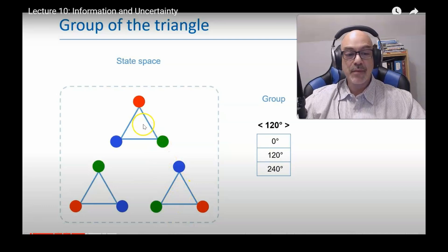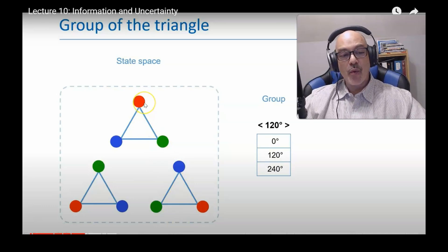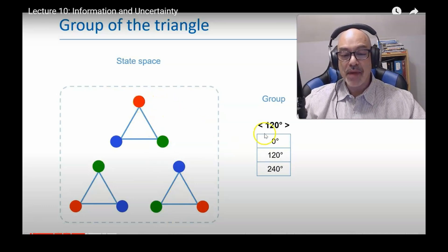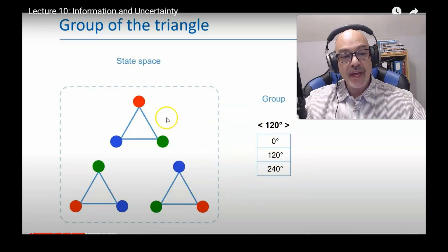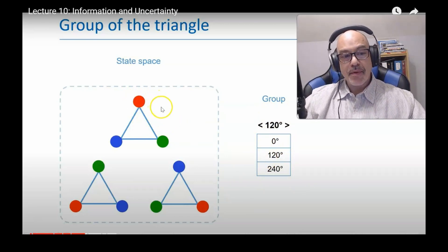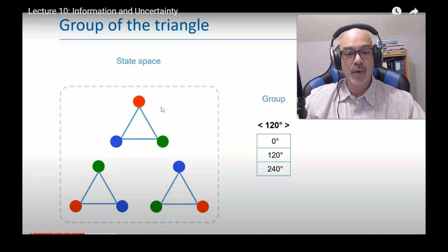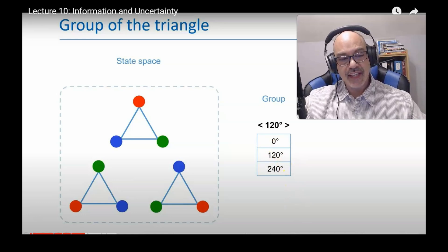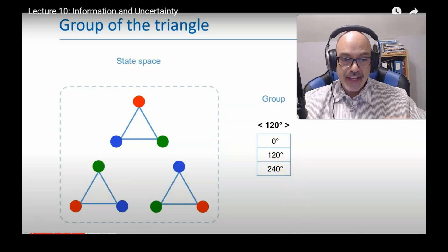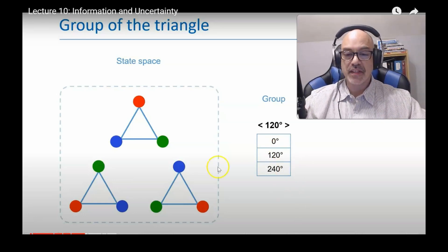If I were to rotate this thing by 45 degrees, that would not be an element, a group element, because it would not keep the triangle within the state space. It would move the triangle to an orientation that is not within the state space. The group is the set of operations that keep the objects within the state space the same.